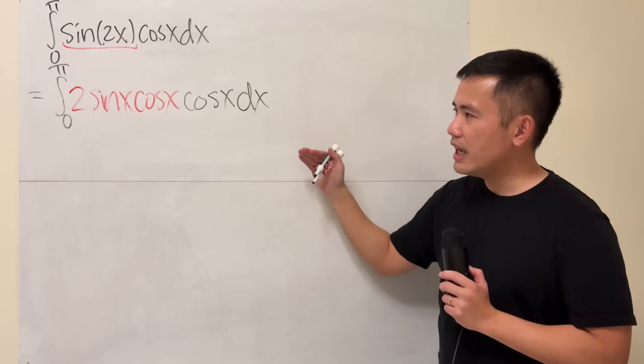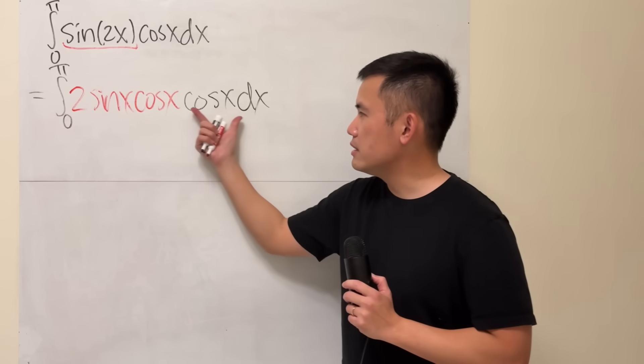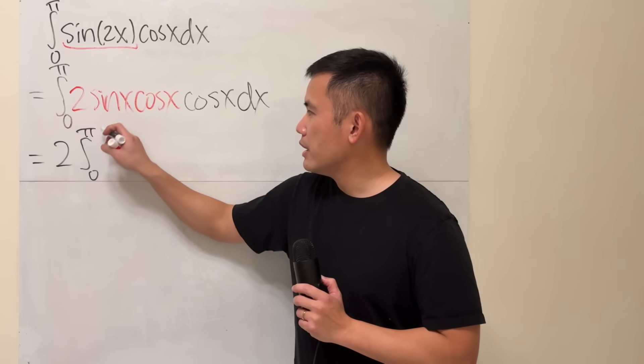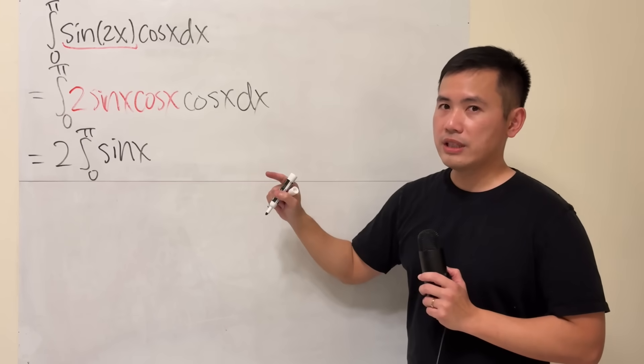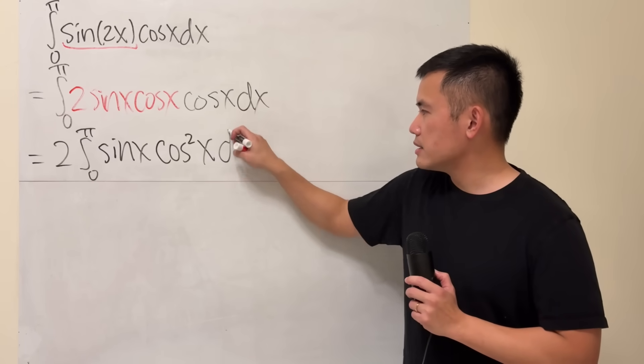Now, let's just go ahead and clean things up a little bit. We have 2 times this. We can put the 2 to the outside. And then the integral, and here is just sine x, cosine x times cosine x. Usually you write this as cosine squared x dx.